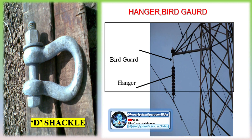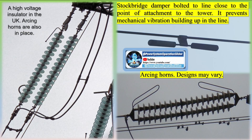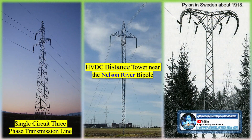Corrosion testing includes a salt spray test, which subjects tower components to a saline mist environment, replicating coastal and marine conditions to assess corrosion resistance of materials and coatings. A humidity test uses high humidity levels to test materials' resistance to moisture-induced corrosion and degradation. Weather simulation testing includes thermal cycling, where materials undergo repeated heating and cooling cycles to simulate day-night temperature variations and seasonal changes. UV exposure testing evaluates degradation of non-metallic components and coatings. An acid rain test sprays components with acidic solutions to test the impact on materials and protective coatings.